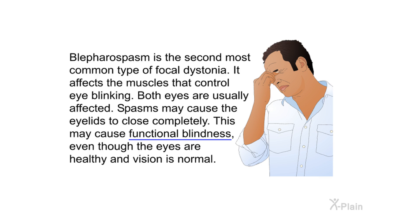Blepharospasm is the second most common type of focal dystonia. It affects the muscles that control eye blinking, and both eyes are usually affected. Spasms may cause the eyelids to close completely, which can cause functional blindness even though the eyes are healthy and vision is normal.